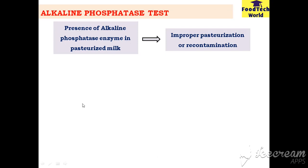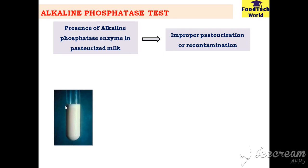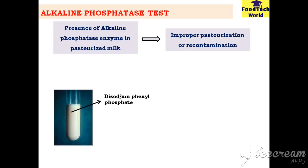Let's take a raw milk sample in a test tube. Raw milk contains alkaline phosphatase enzyme. We add disodium phenyl phosphate, which acts as a substrate for the alkaline phosphatase enzyme and is a source of phenols. When alkaline phosphatase acts upon disodium phenyl phosphate, it liberates phenols. The amount of phenol liberated is directly proportional to the activity of the alkaline phosphatase enzyme.